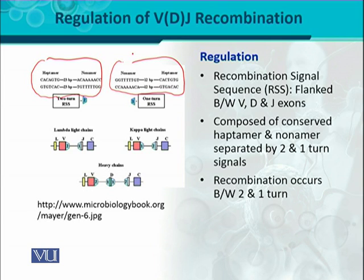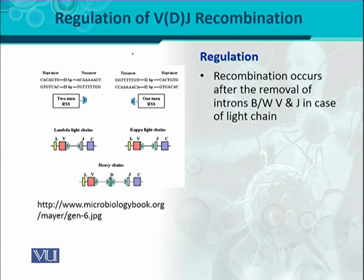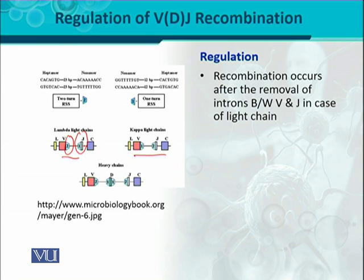Recombination occurs between two-turn and one-turn signals, so the different V, D, or J regions are joined together. In the regulation, recombination occurs after the removal of introns between V and J. In case of the light chain — for lambda chain, J has a one-turn upstream and V has a two-turn downstream, allowing V and J to join. For kappa, J has a two-turn upstream and V has a one-turn downstream, so they unite together.